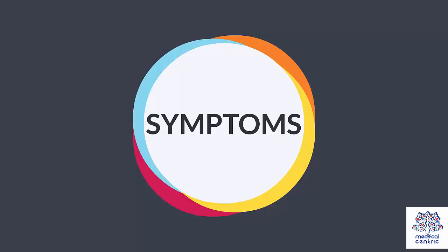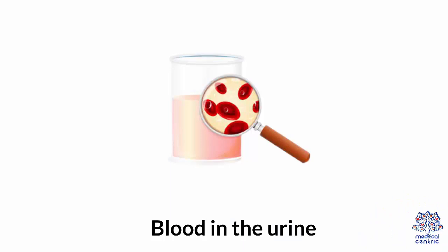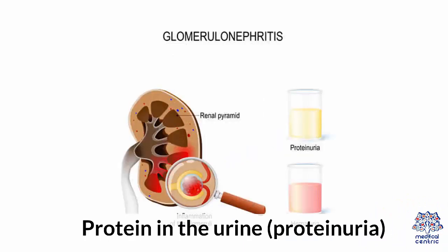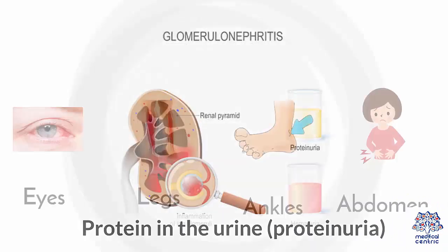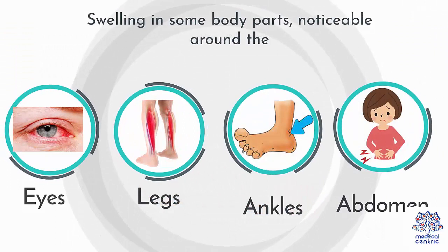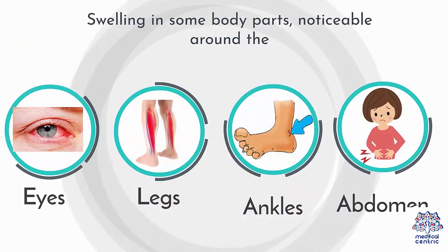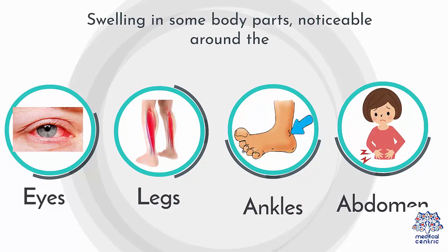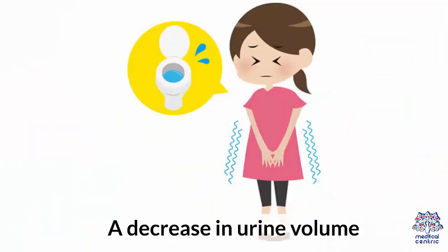Symptoms include blood in the urine, protein in the urine or proteinuria, swelling in some body parts noticeable around the eyes, legs, ankles, and abdomen — called edema — and a decrease in urine volume.